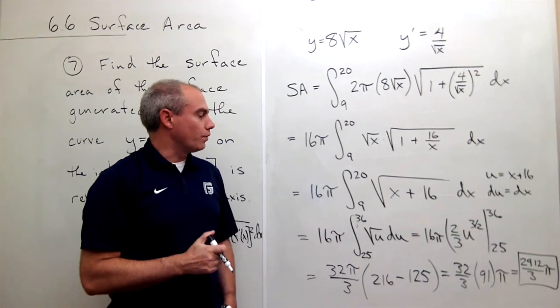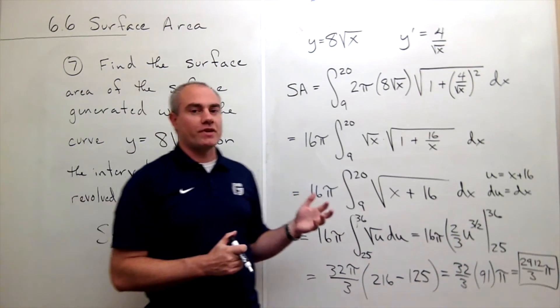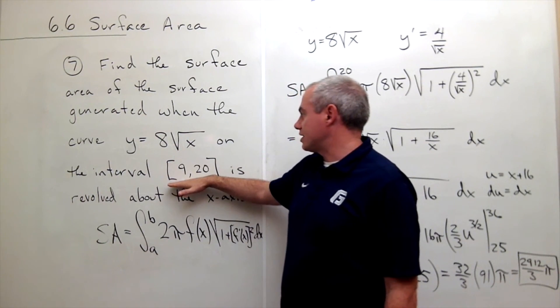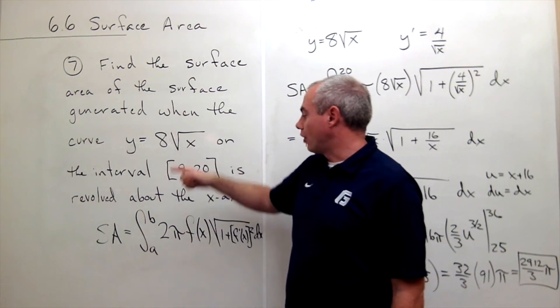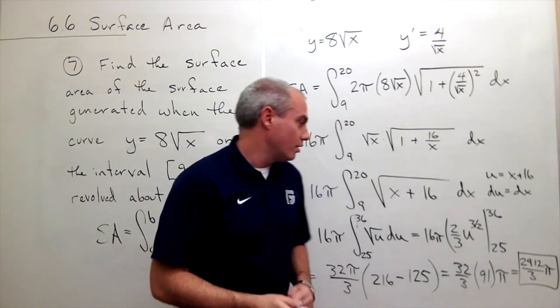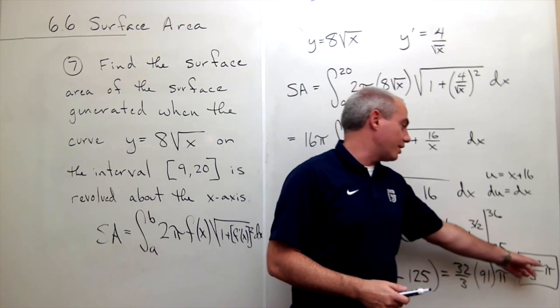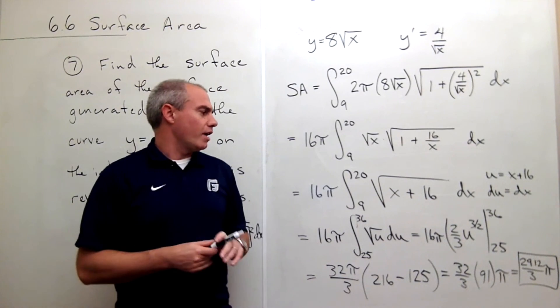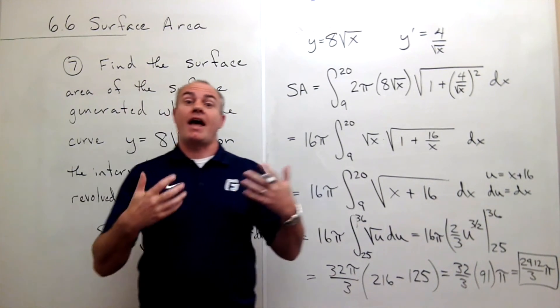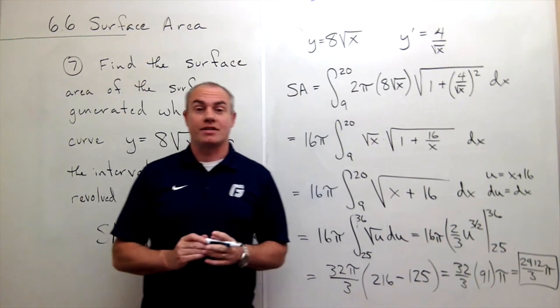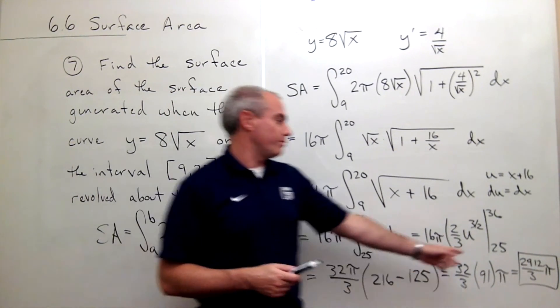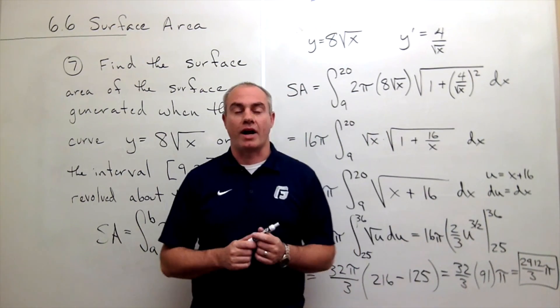And so the answer to how much surface area there would be on this curve over this interval when this curve is revolved around the x-axis would be 2912 over 3 π. And what is the units on that? Well, this would be in units squared.